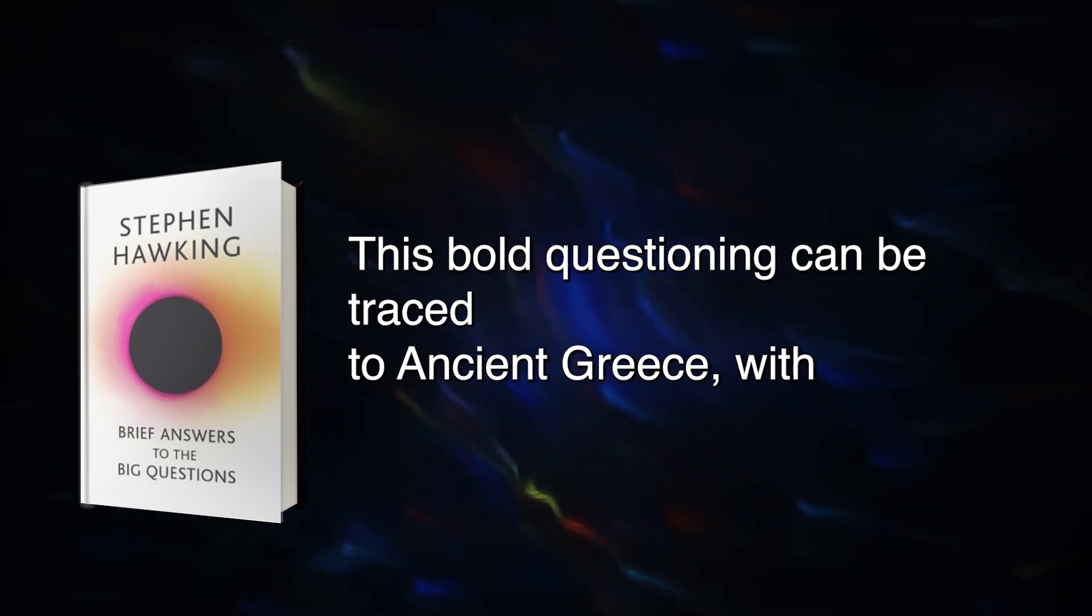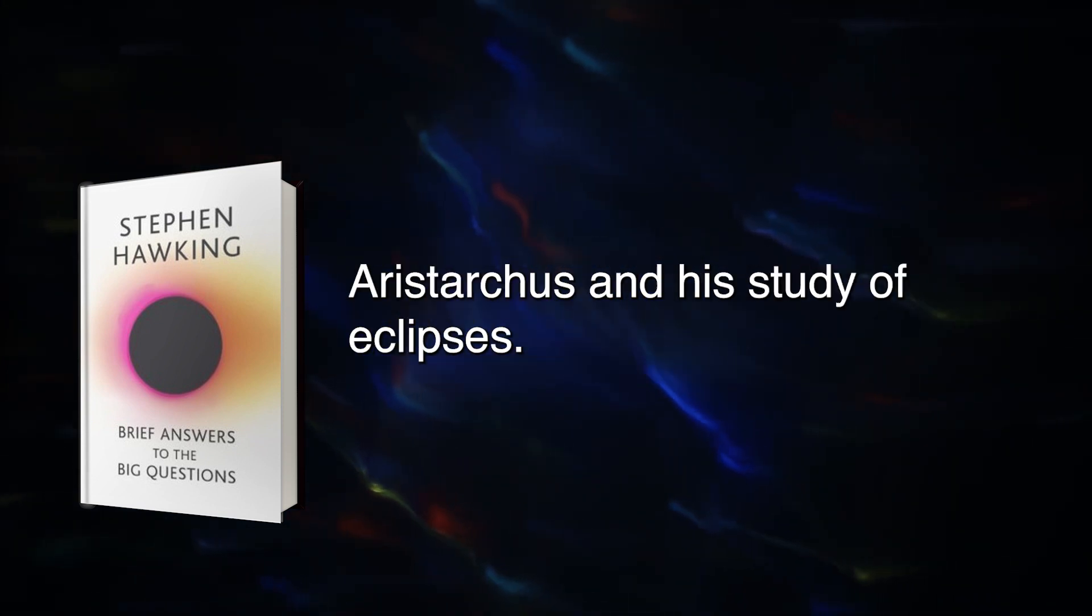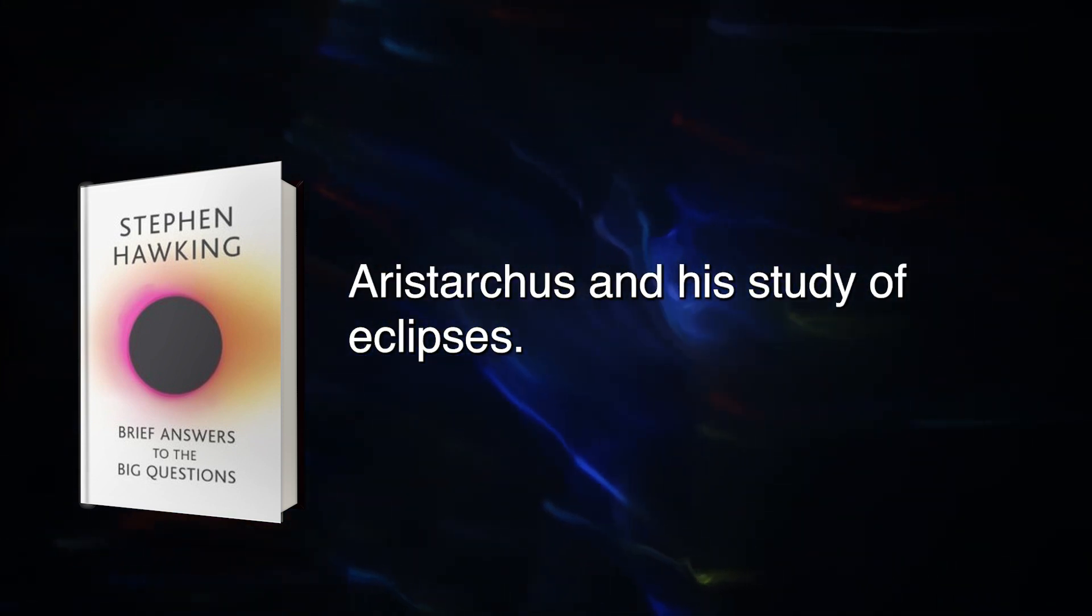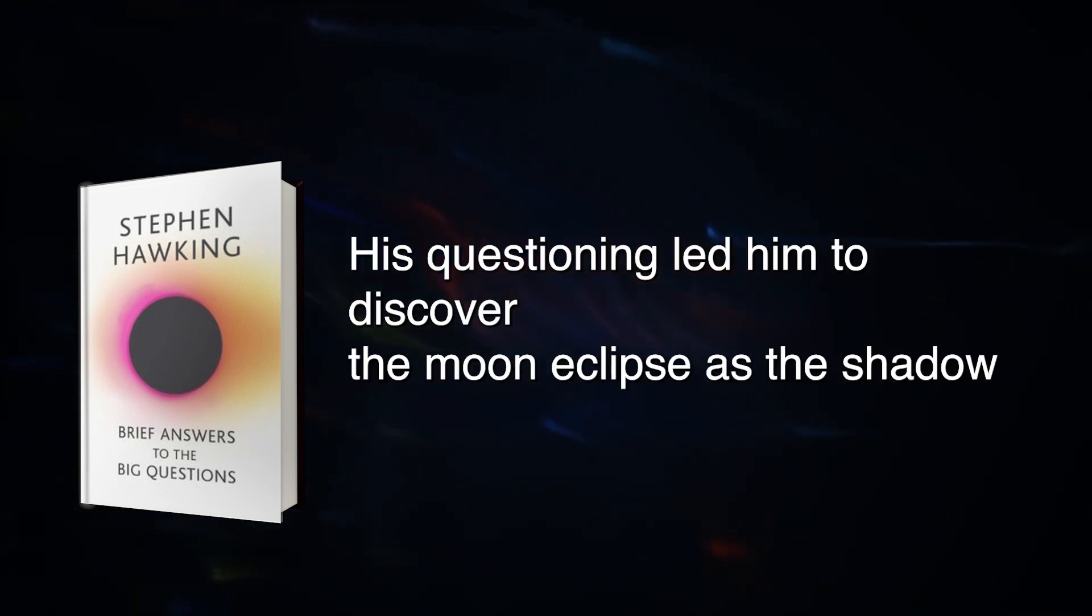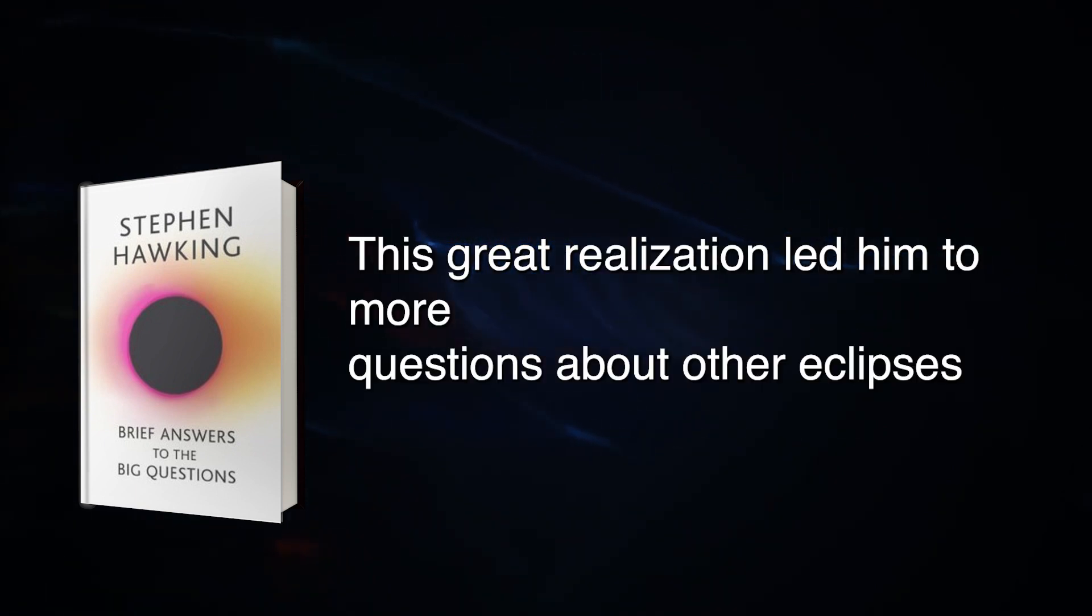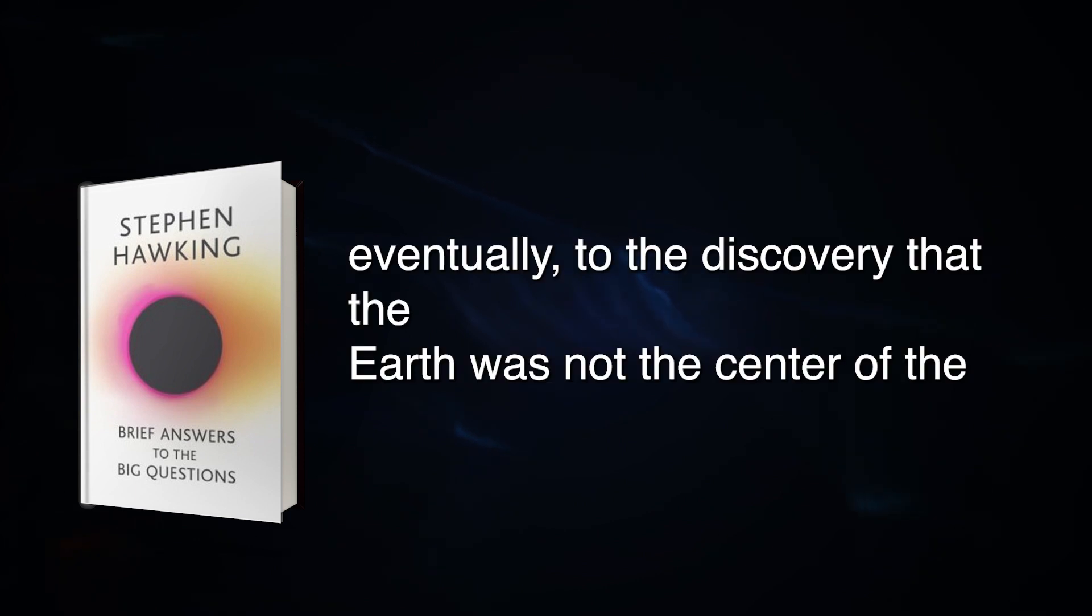This bold questioning can be traced to ancient Greece, with philosopher Aristarchus in his study of eclipses. He discerned that eclipses were natural events and not miracles summoned by gods. His questioning led him to discover the moon eclipse as the shadow of the earth over the moon. This great realization led him to more questions about other eclipses and eventually to the discovery that the earth was not the center of the universe.